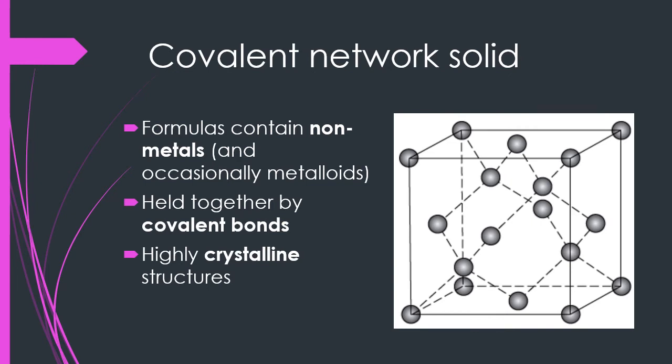The fourth and final category is the covalent network solid. As the name implies, this solid is held together by a network of covalent bonds and therefore takes on a highly crystalline structure. This generally occurs between nonmetal atoms, although there are some metalloids such as silicon that show up here as well.